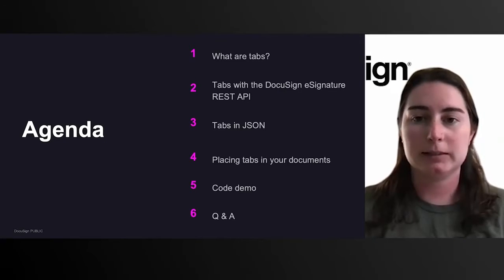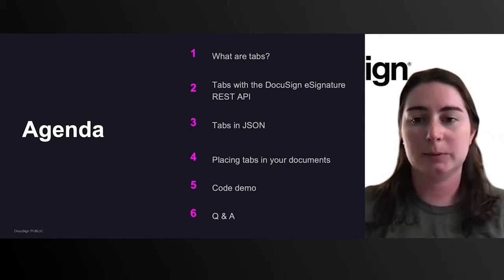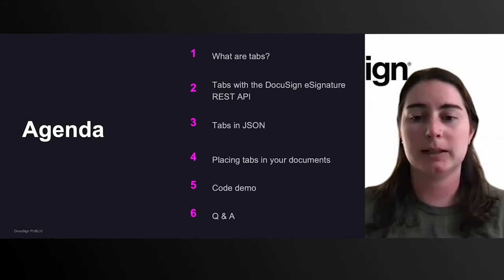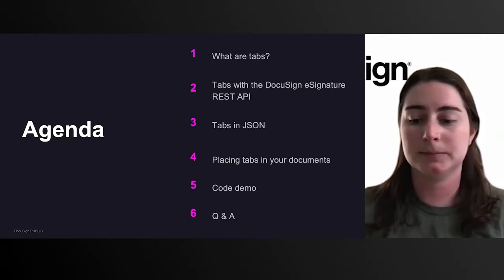A quick look at today's agenda: we're going to be talking about tabs, I'll define what those are. We'll be talking about how to use tabs with the DocuSign eSignature REST API and specifically what the tabs look like in your JSON request body. We'll be talking about how to position tabs in your documents, and then I'll be doing a code demo and we'll leave some room for Q&A.